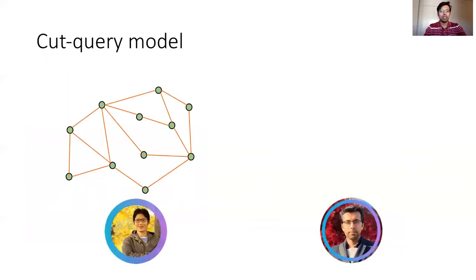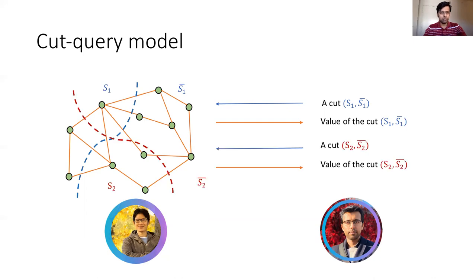The cut query model can be seen as a two-player game. One of the players, Danupon, holds the graph view. I, on the other hand, am called the querier. I can ask Danupon certain kinds of queries, and Danupon will answer those queries. The specific kind of queries I can make are cut queries. That is, I can send Danupon the description of a cut, and Danupon will answer me with the value of the cut. Here I asked Danupon for the cut S1 complement of S1. The cut is the blue dashed line in the figure. Danupon gives back the value of the cut. I am charged once. This is an adaptive process. Depending on what I receive from Danupon, I issue another query, S2, and Danupon answers the value of the cut corresponding to S2.